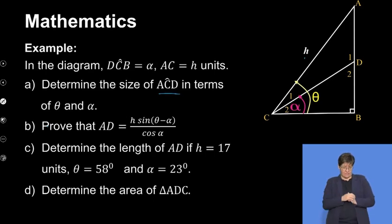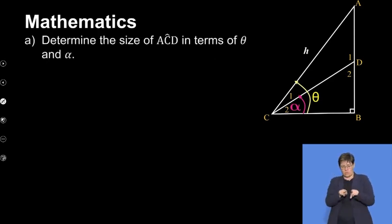We'll get to that in a minute. Let's begin with the first question: finding the size of ACD in terms of theta and alpha. They want us to find the size of this angle C1, this little piece here. Because the whole angle is theta here and the small piece here is alpha, obviously ACD has to be just theta minus alpha.